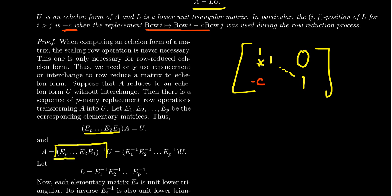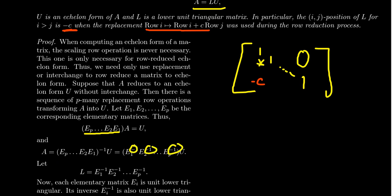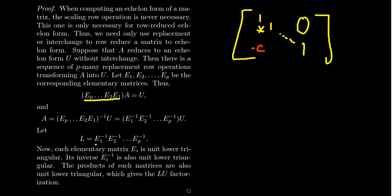Taking the inverse of a product, the shoe-sock principle comes into play — you put your socks on then your shoes, but take your shoes off then your socks. That reverses the order of the elementary matrices, so now E1 shows up first, then E2, then EP, but we take the inverse of each. The inverse of an elementary matrix of replacement type is also a replacement type, which is why an inverse C shows up — because we added C times row J, and by the shoe-sock principle we take the inverse of C. We define L to be the product of all these elementary matrices.